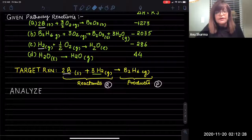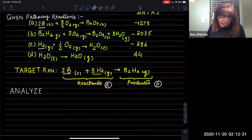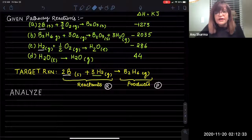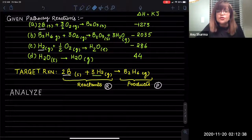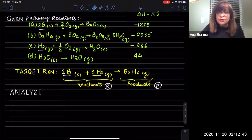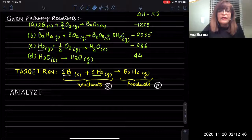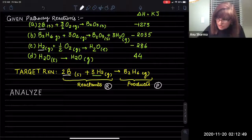In this example, four pathway reactions are given to you, and you are given the target reaction which is highlighted in yellow. Two moles of boron are reacting with three moles of hydrogen to give you B₂H₆. This is our target reaction. Now let us analyze our pathway reactions, starting with pathway reaction number one.